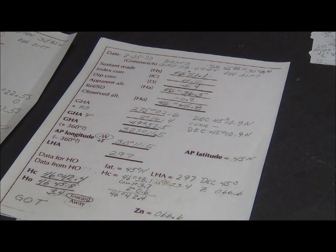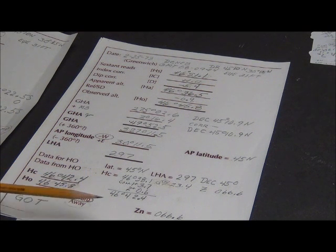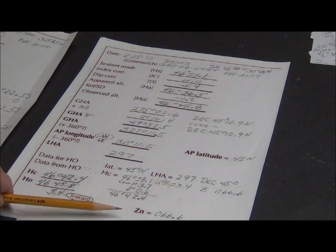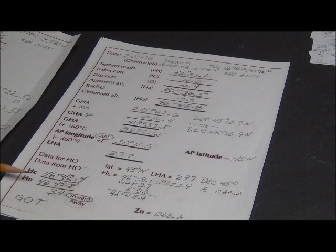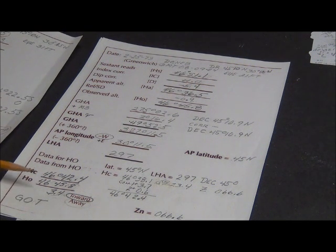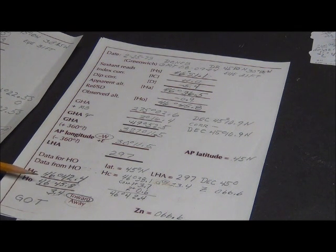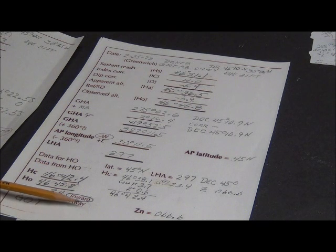But here's Deneb. The same idea. We come down and we have to make a decision towards or away again from the azimuth. So we look at this, greater, observed, towards. That's observed, so it's greater, so it's towards.